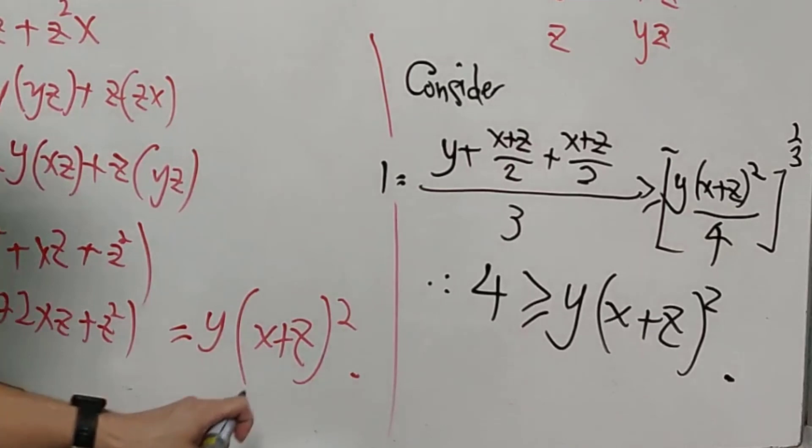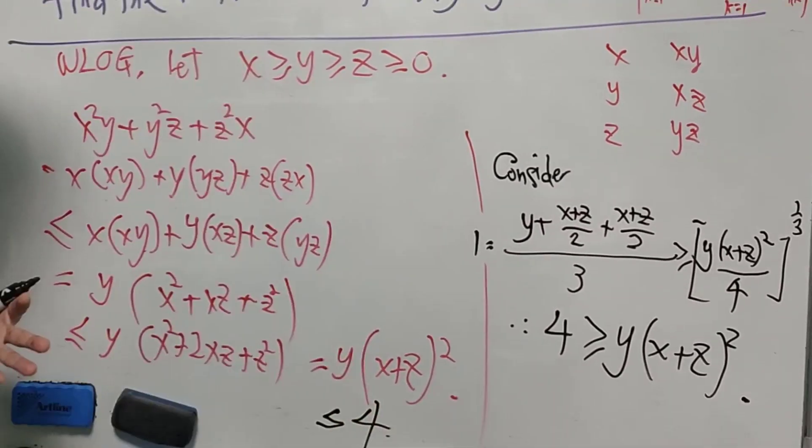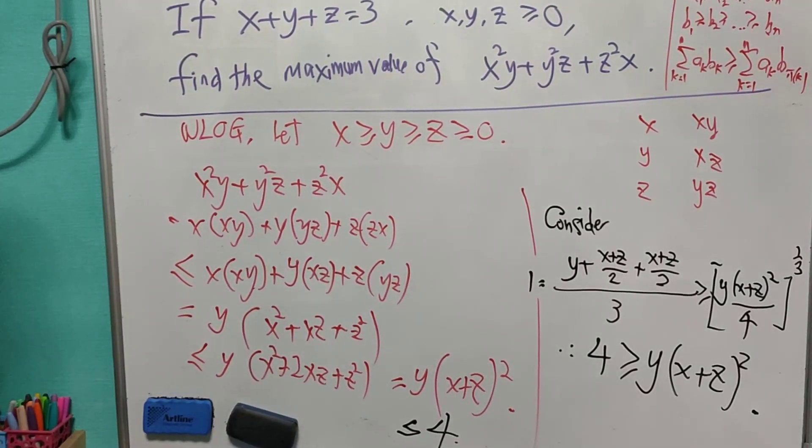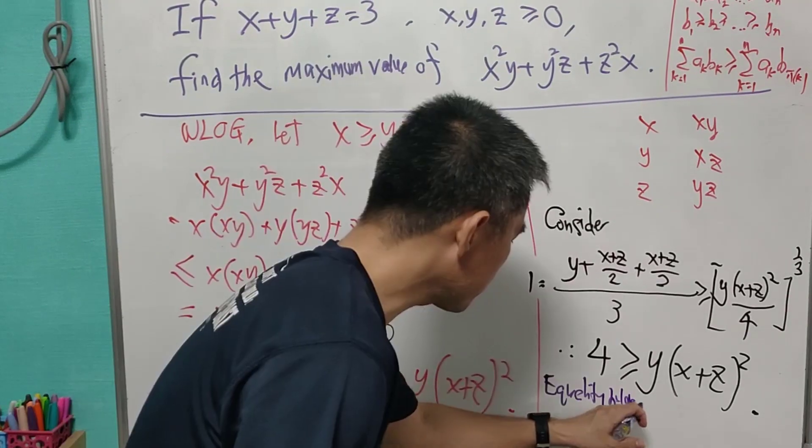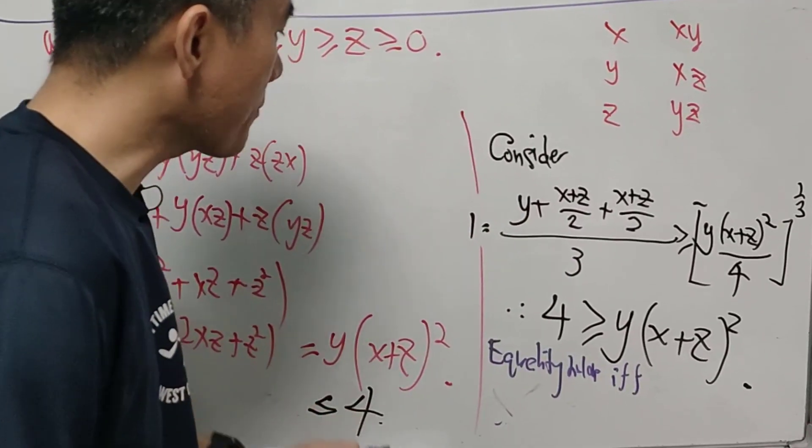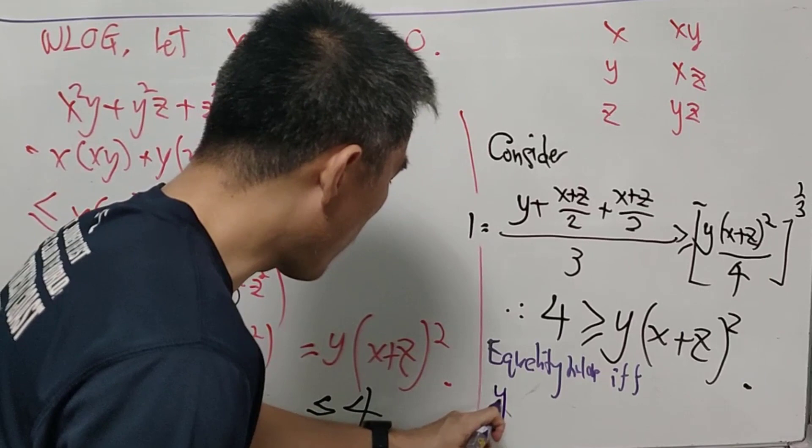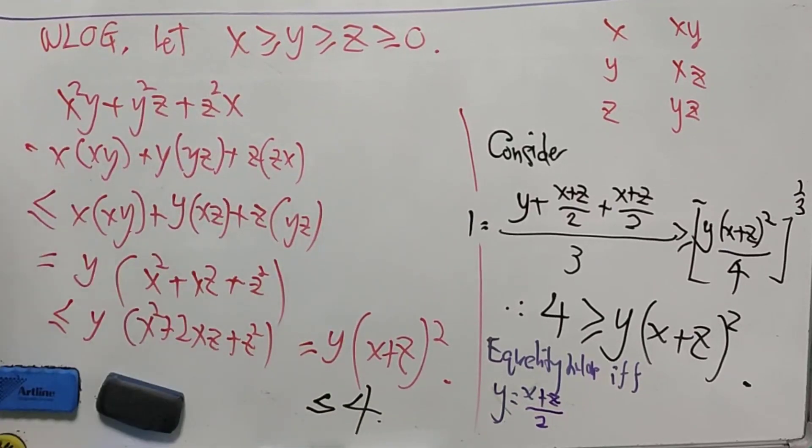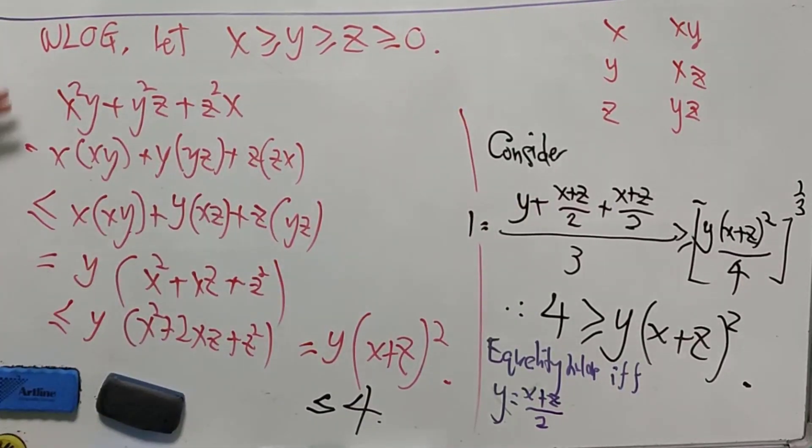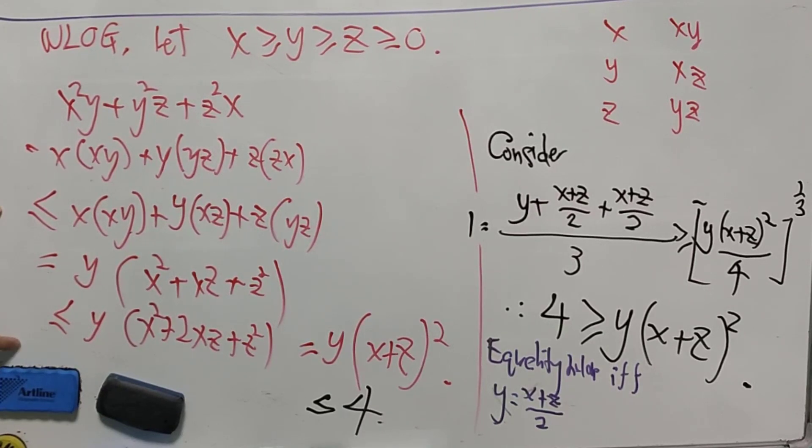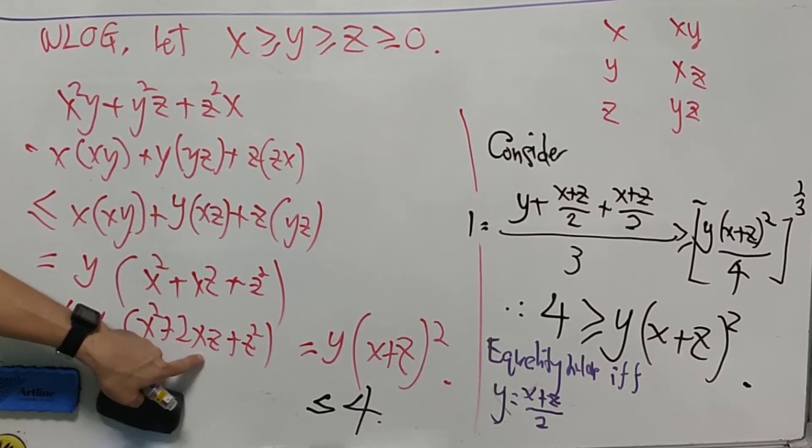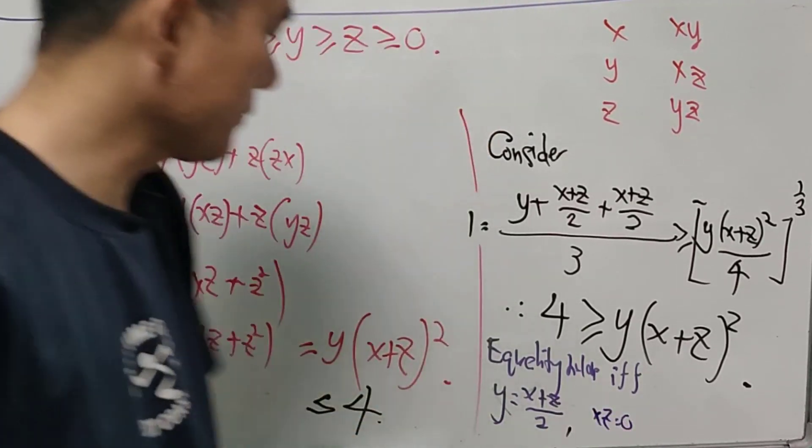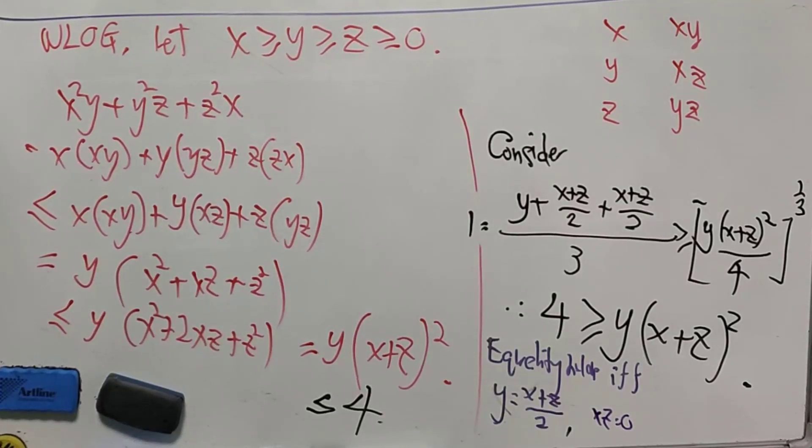Okay, so this will mean that this will be less than or equals to 4. With this, we still can't say that the maximum equals to 4. So where will equality holds? The equality holds if and only if Y equals to Z plus X over 2. That is for the equality holds here. But the equality holds here even only if X or Z equals to 0.